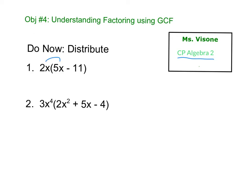All right, so 2x times 5x is 10x squared minus 22x. Number two, we get 6x to the sixth plus 15x to the fifth minus 12x to the fourth.